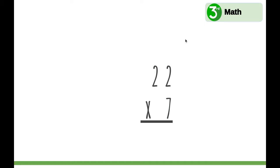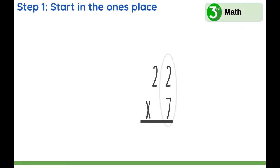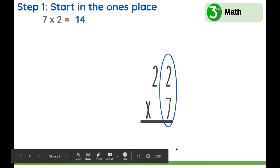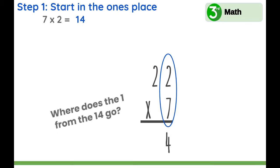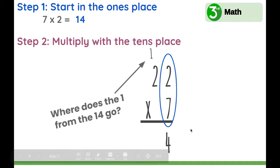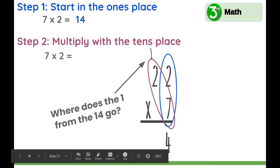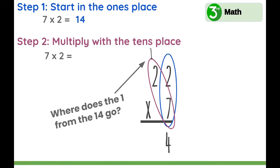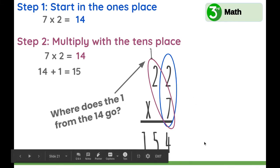Let's do one more example: 22 times 7. First, we're going to start in the ones place. What is 7 times 2? 14, yes. Which digit goes here? The 4 — the number in the ones place. Where does the 1 from the 14 go? We carry it to the tens. Next, let's multiply with the tens place: 7 times 2. And 7 times 2 is 14. But now we're going to do what? Add. 14 plus 1 equals 15. So 22 times 7 equals 154.